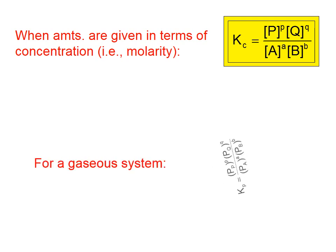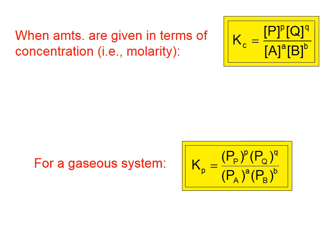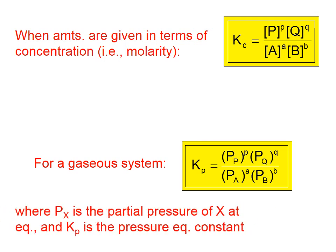For a gaseous system, which we don't measure often with molarity, but more often with pressures of gases, there's a similar expression. But instead of using the concentrations of each substance, we use the partial pressures. Whenever you are calculating a Kp value, it's wise for all of your pressures to be in atmospheres.